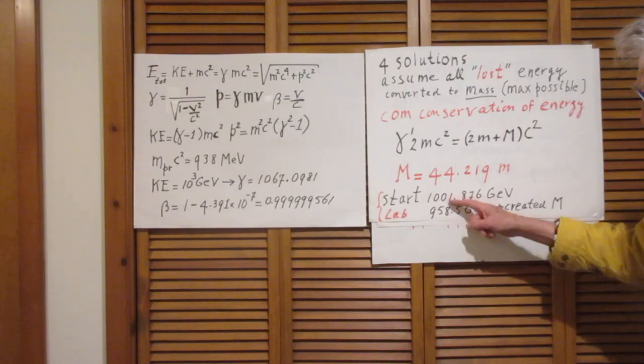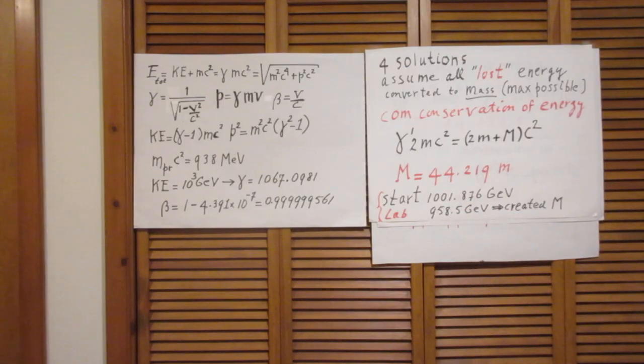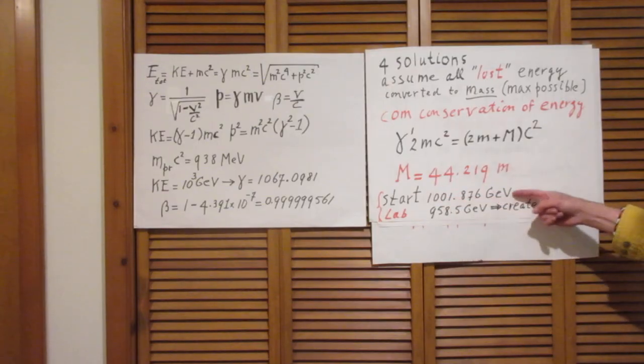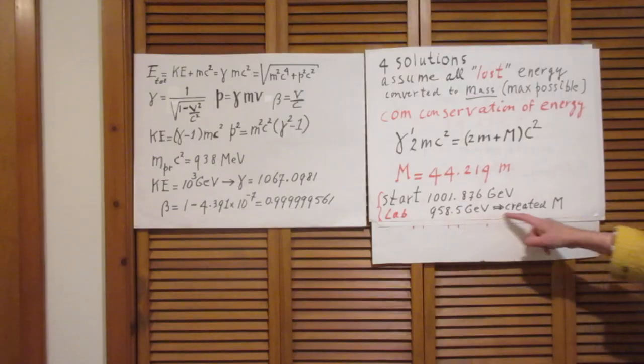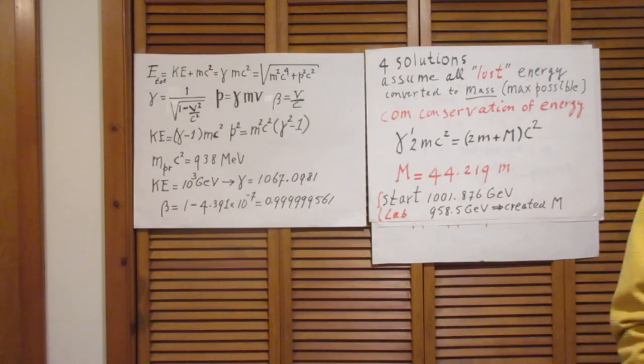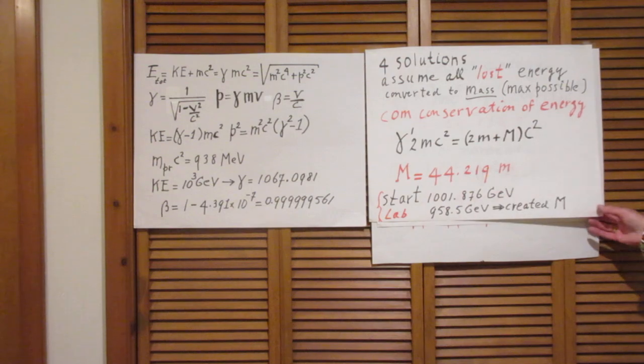Just look at it. Almost 96% of the energy that we had available before the collision is now being used to create that particle with mass capital M.